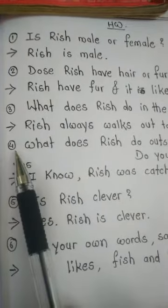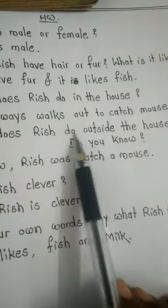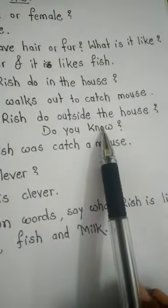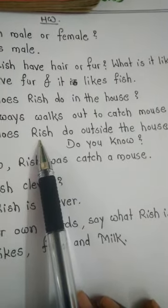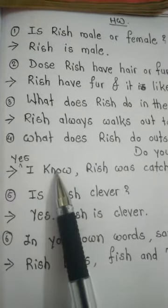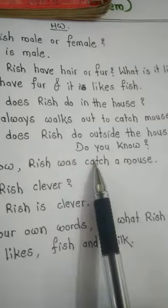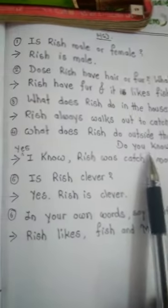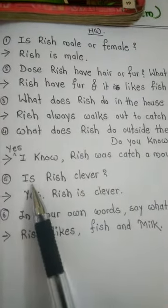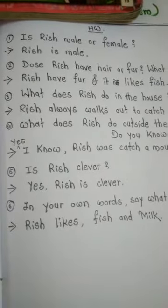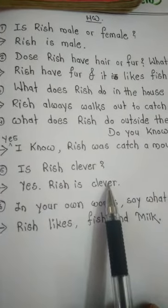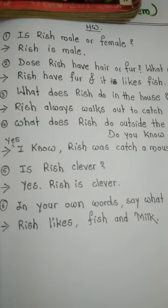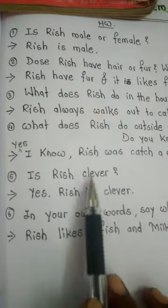Then the fourth question is: what does Rich do outside the house? Rish outside kya kerta hai? Rish was catch a mouse. Rish is clever. Woh hushyar tha — agar clever nahi hota toh mouse ko kaise pakarta? So, Rish is clever.